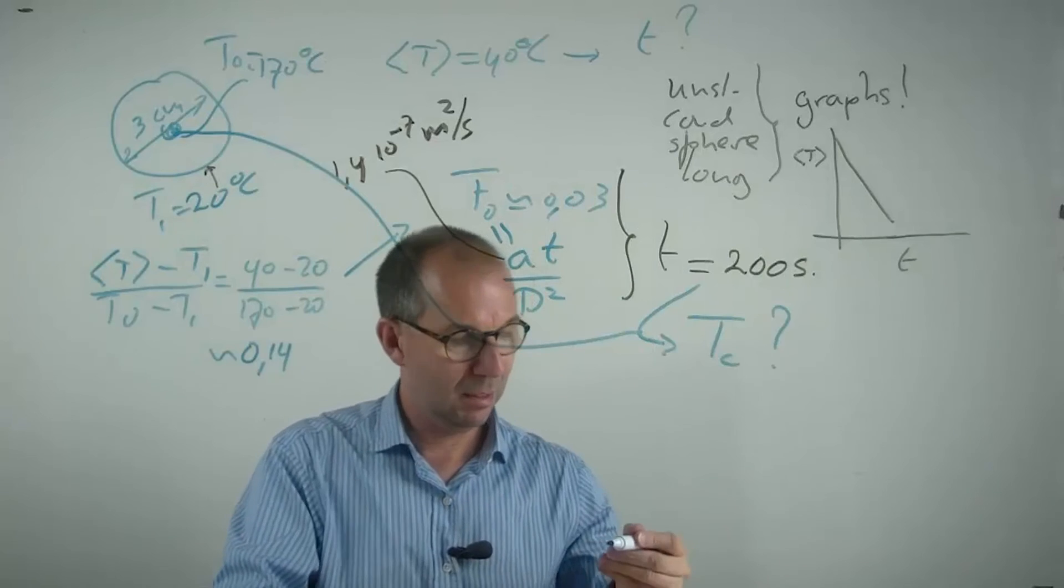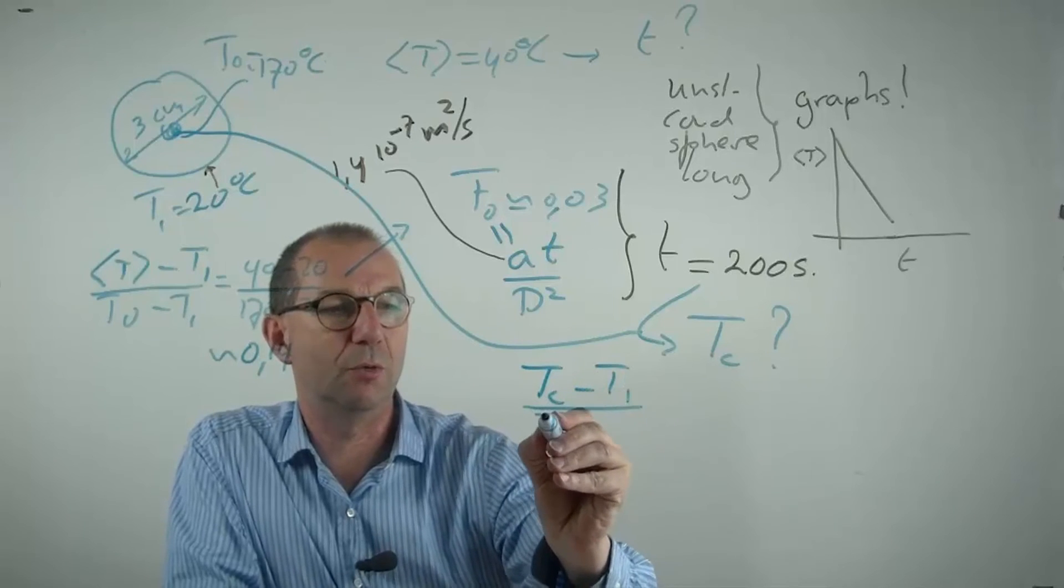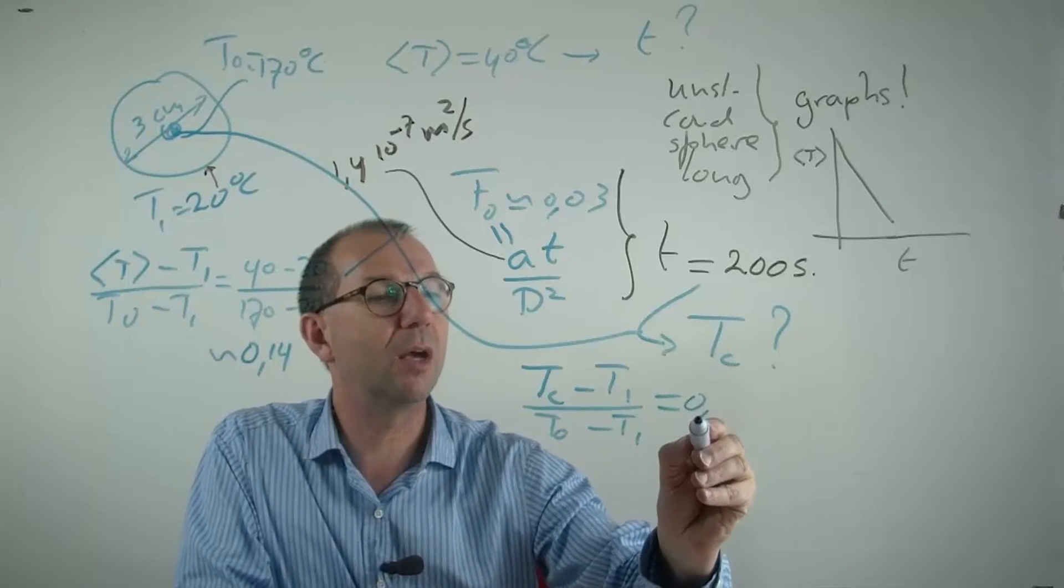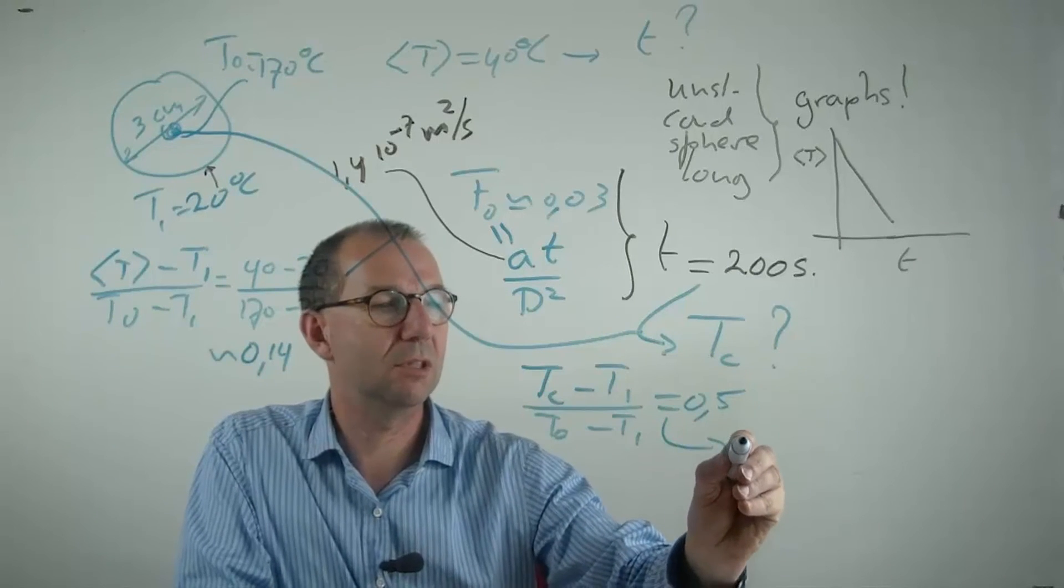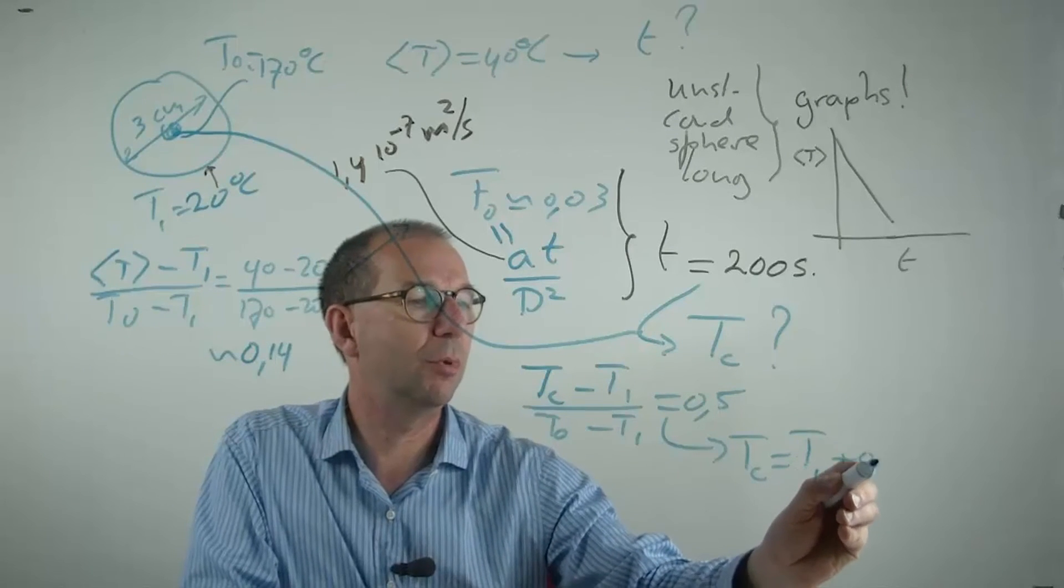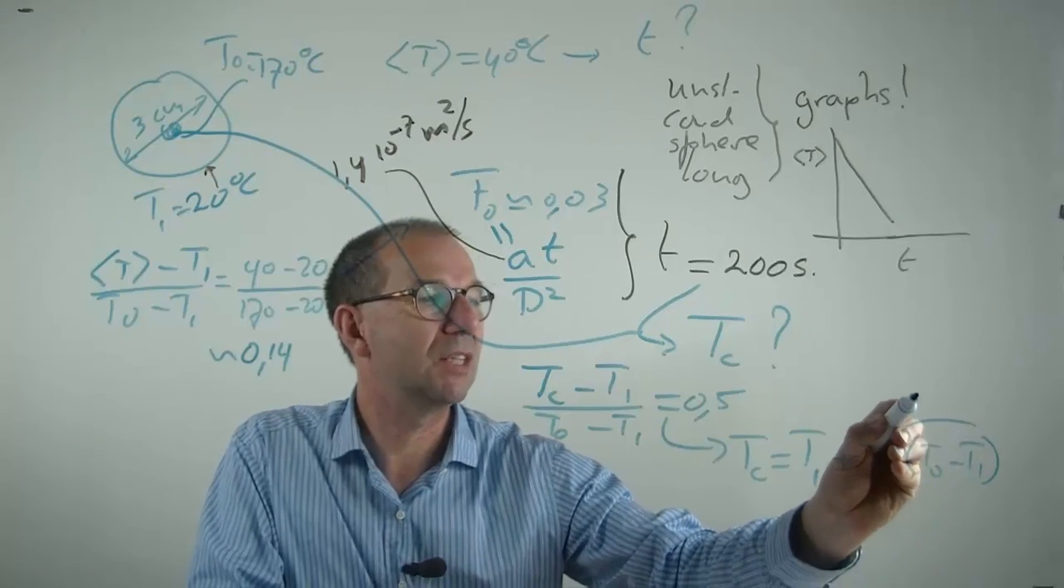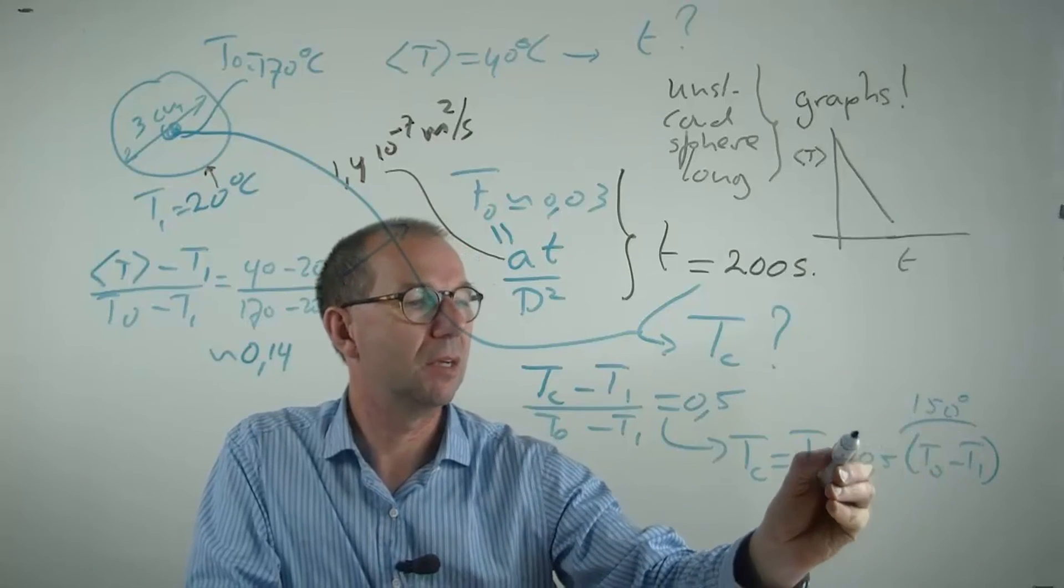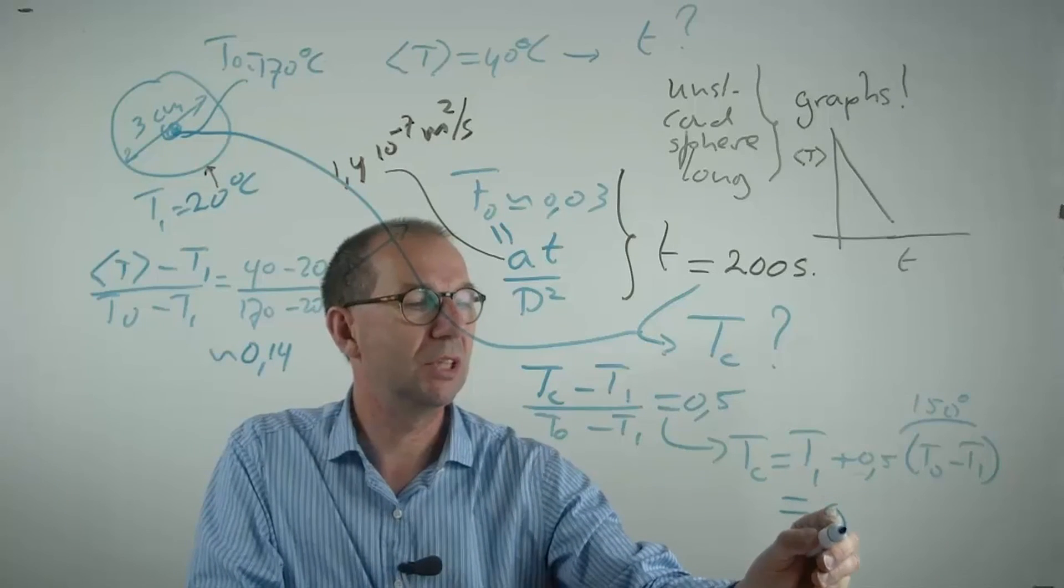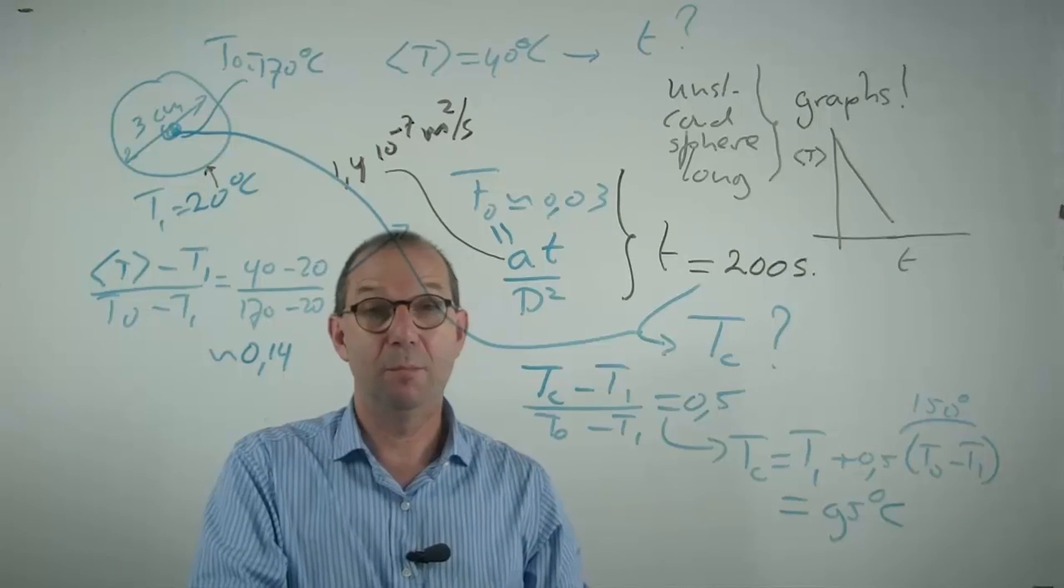If I do that on this graph, I get that T_c minus the wall temperature over the initial temperature minus the wall temperature is 0.5. And thus, the center temperature equals T_∞ plus 0.5 times the original temperature difference. This is 150 degrees. Half of that is 75 plus the 20 from the outside. The inside still has temperatures comparable to boiling water.